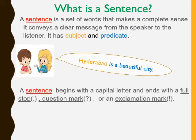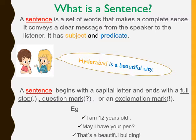A sentence begins with a capital letter and ends with a full stop, question mark, or an exclamation mark. Examples: I am 12 years old. May I have your pen? That's a beautiful building.